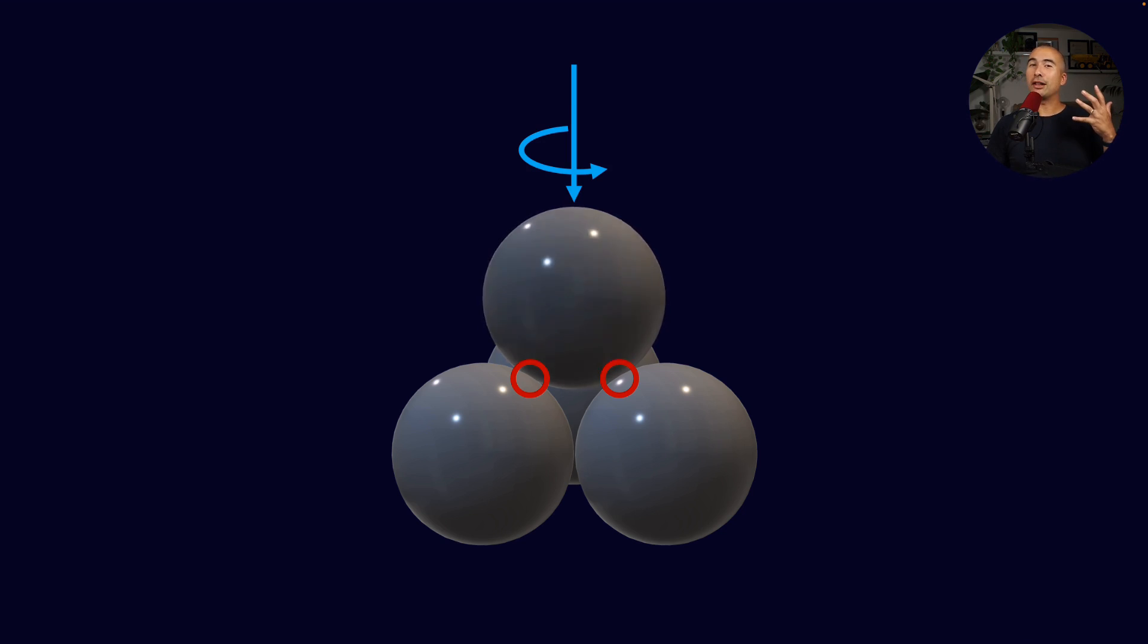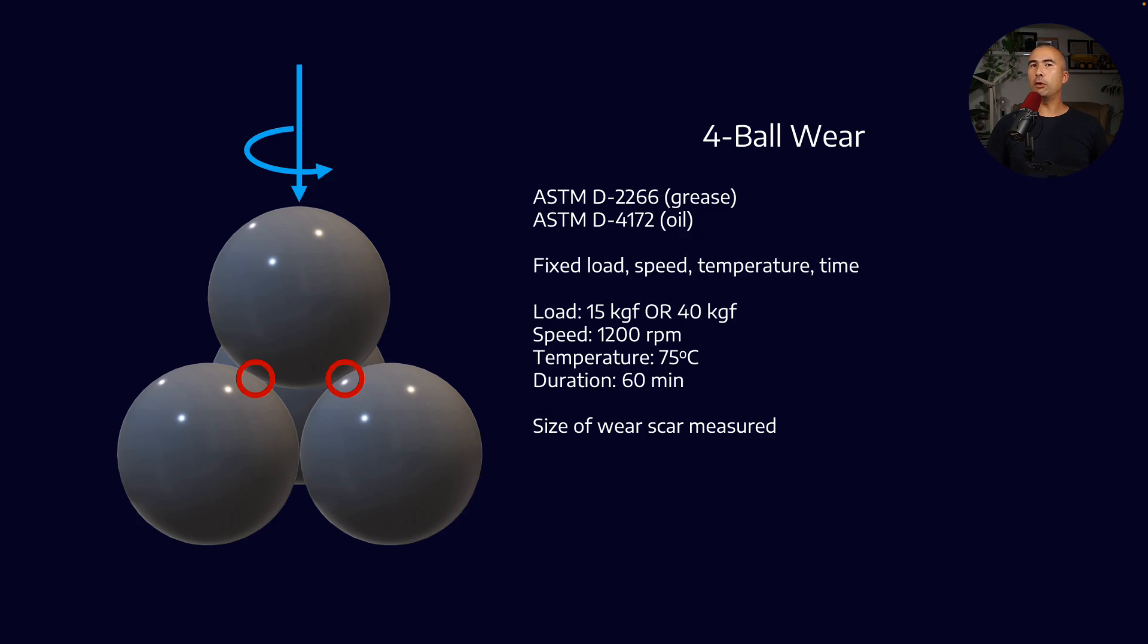Now, what are the parameters for the test? Because we do have some ASTM standards around this. So the four ball wear and the four ball weld test are two separate tests that use the same apparatus. So there's different ASTM numbers for both greases and oil. It's generally fixed load, speed, temperature, and time. And the amount of load that's applied is controlled.